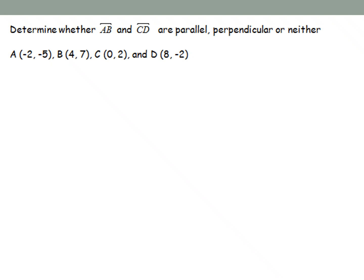So for this one, determine whether line AB and line CD are parallel, perpendicular, or neither. So for our points here, we got A is negative 2, negative 5, B is 4, 7, C is 0, 2, and D is 8, negative 2. So for this one, we need to figure out our slopes for both of these. So we need to find slope of AB.